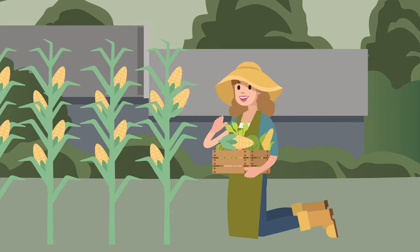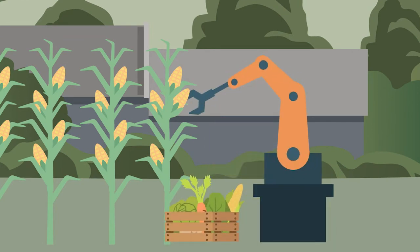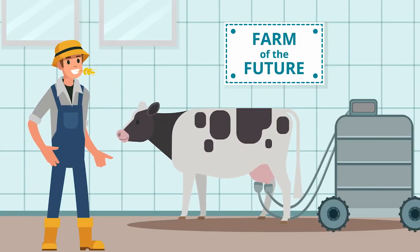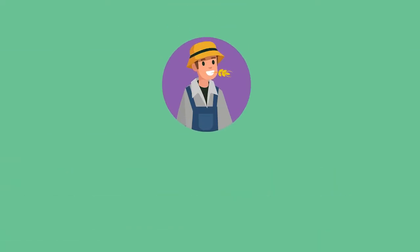Some pieces of technology can be used to harvest crops so that people don't have to. Some robots can even milk cows and keep them clean. Although these technologies are great for farmers,